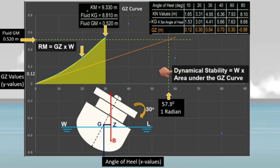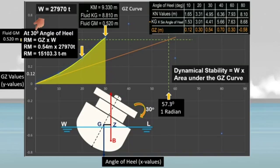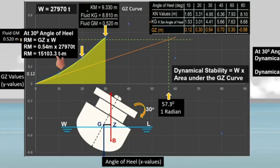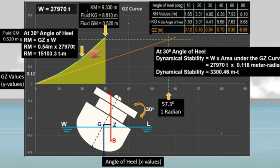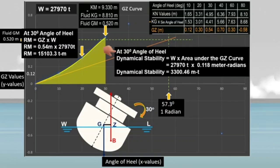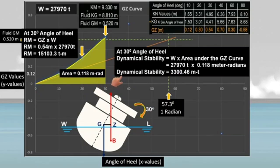Let's do some calculations. The ship's displacement at her loaded condition is 27,970 metric tons. At 30 degrees angle of heel, the ship's righting lever is 0.54 meter. Multiplying it by the ship's displacement, the moment of statical stability is 15,103.3 ton-meters. To determine the dynamical stability at a 30-degree angle of heel, multiply the ship's displacement by the area under the GZ curve up to 30 degrees. The dynamical stability is 3,300.46 meter-tons.